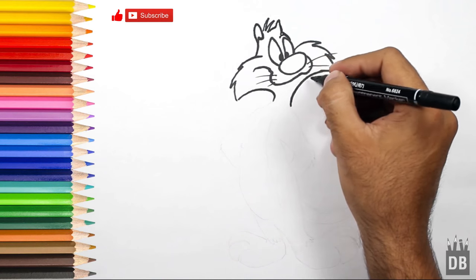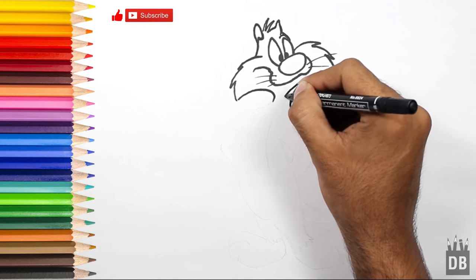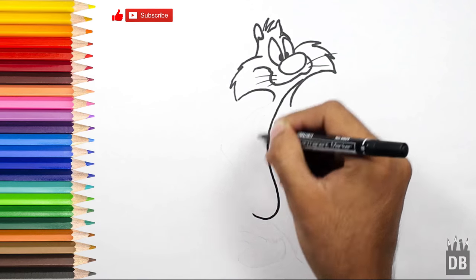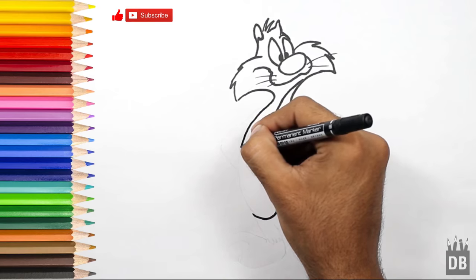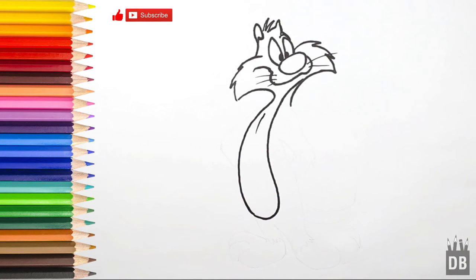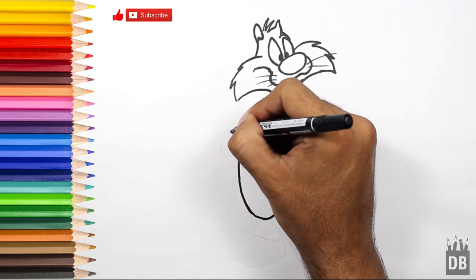For the body, a line will follow along from here like this. From here his first arm will come.